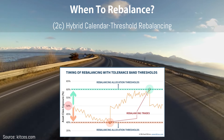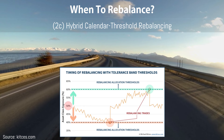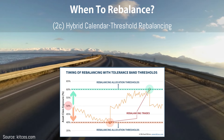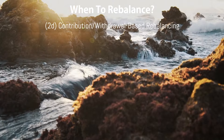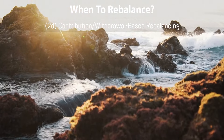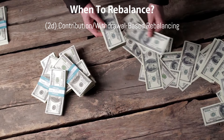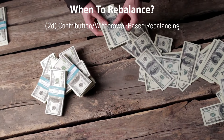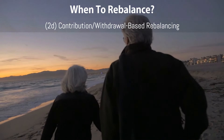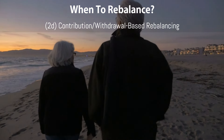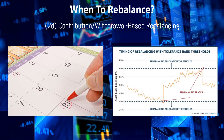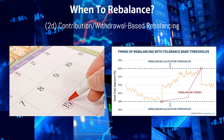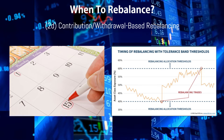A hybrid strategy combines calendar and threshold rebalancing, where you rebalance at least once a year and additionally whenever thresholds are breached. Finally, contribution and withdrawal-based rebalancing involves using new contributions during the accumulation phase, or withdrawals during retirement, to facilitate rebalancing. However, this method may not be sufficient on its own, so you will likely need to augment it with one of the other strategies to maintain your target portfolio.